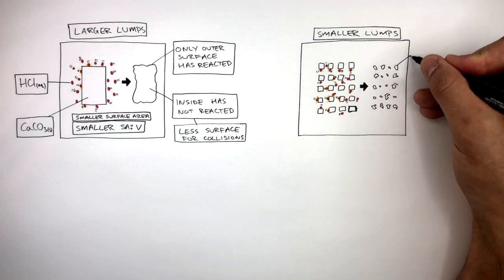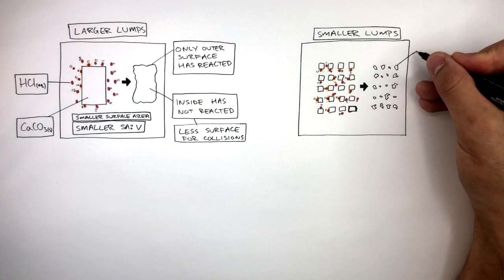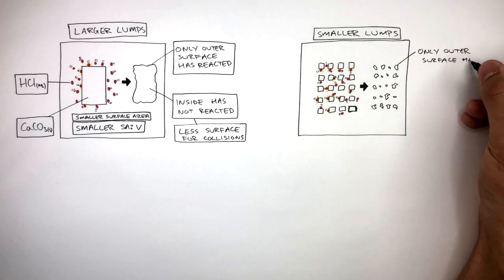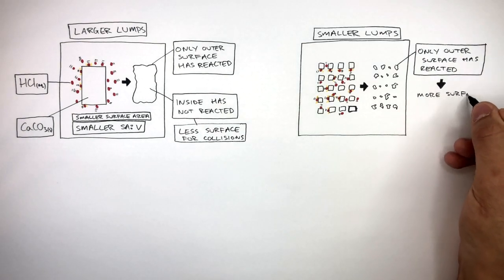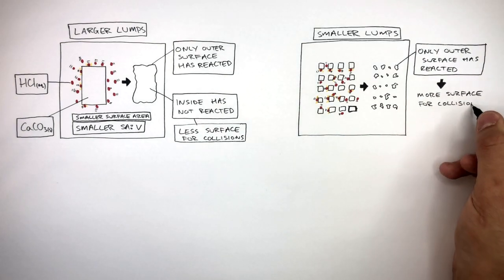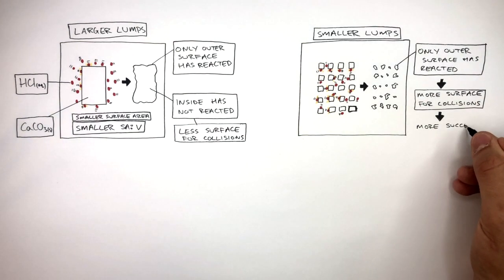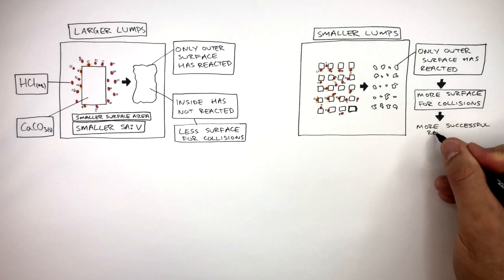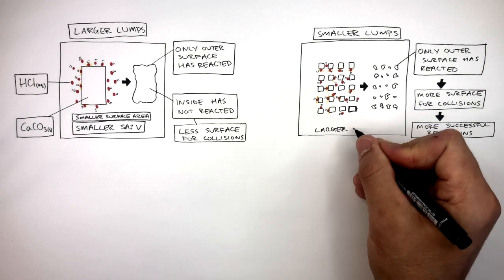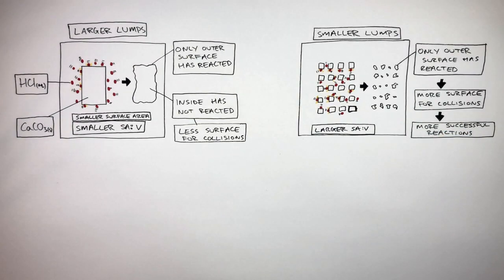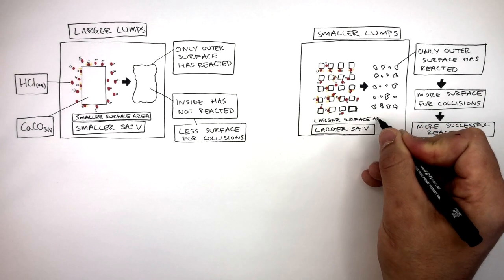In the reaction with the smaller lumps, only the outer surface has reacted as well. However, there is more surface for collisions, so there have been more successful reactions. This is caused by the smaller lumps having a larger surface area to volume ratio, or a larger surface area.